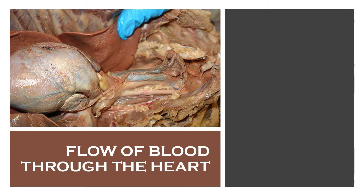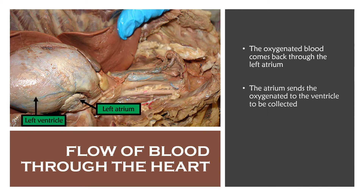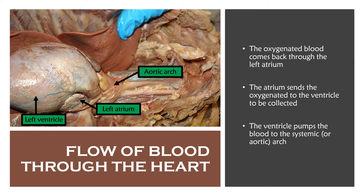The blood is now becoming oxygenated and it's gonna come back to the heart to get pumped to the rest of the body. Oxygenated blood from the lungs comes back through the left atrium. The atrium then sends that blood to the ventricle, which pumps it to the systemic arch, or the aortic arch — it depends on your name preference.